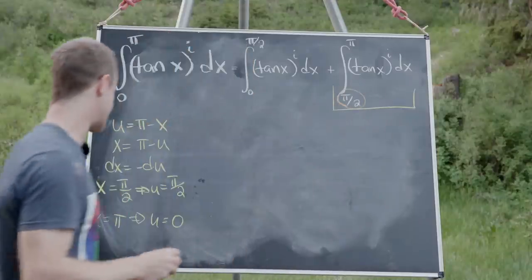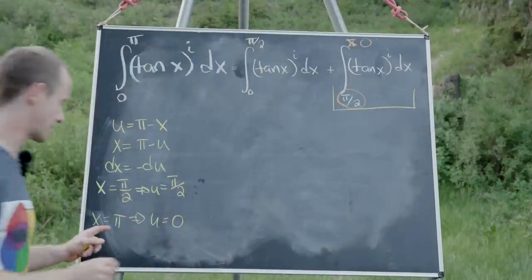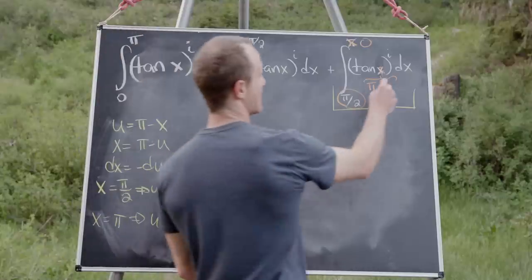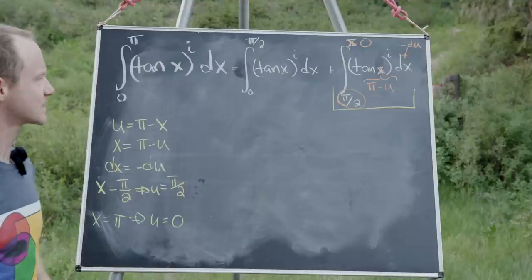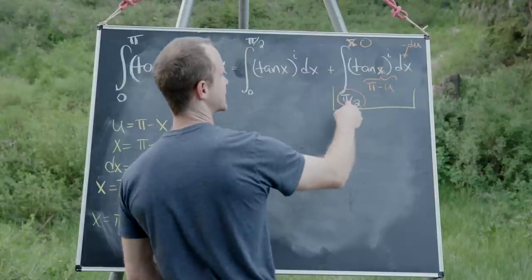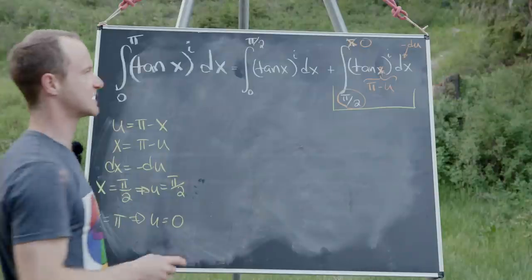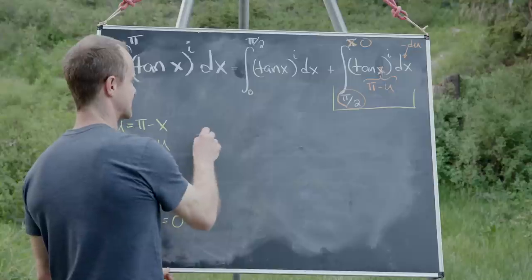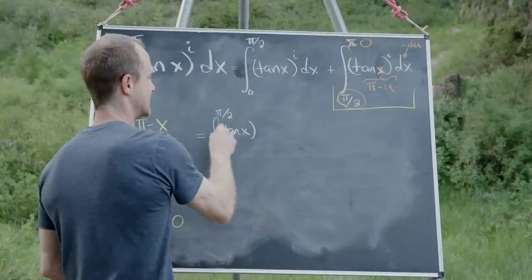The lower bound π/2 stays the same, the upper bound π gets replaced with 0, the x in tangent gets replaced with π minus u, and dx gets replaced with minus du. We take that minus sign and use it to switch the bounds of integration, then perform a trivial change of variables replacing the dummy variable u with x again.